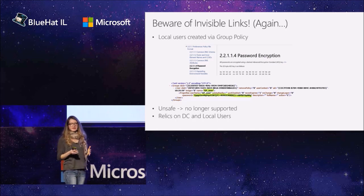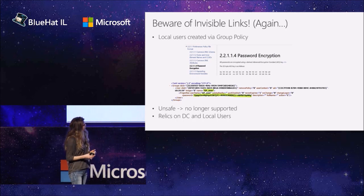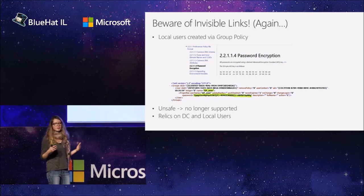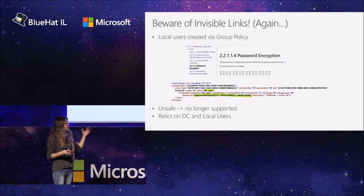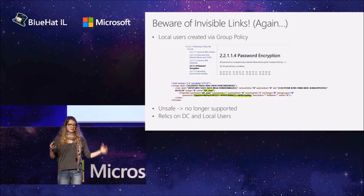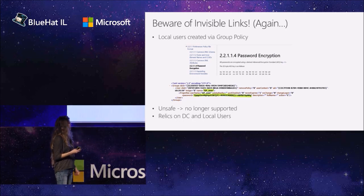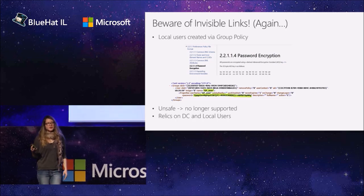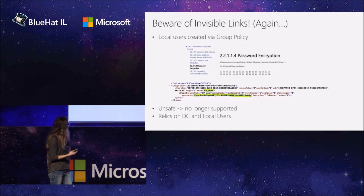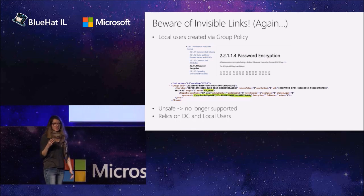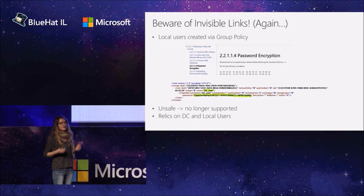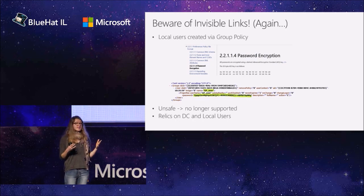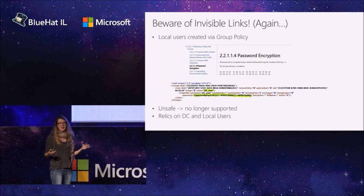So if attackers can compromise a single machine and get admin privileges, they're able to move using those credentials to any other domain machine. Let's talk about some more invisible links created using local users. There's actually a group policy that can define new local users on domain machines. As with all group policies, all its information is stored in the SYSVOL share, which any domain user can access. The password is not stored in plain text, but it is stored encrypted using an encryption key you can find online. This is not very secure — this is why this group policy is actually no longer supported. However, we have found a lot of environments where there are still relics on the domain controller and those local users still exist on machines.